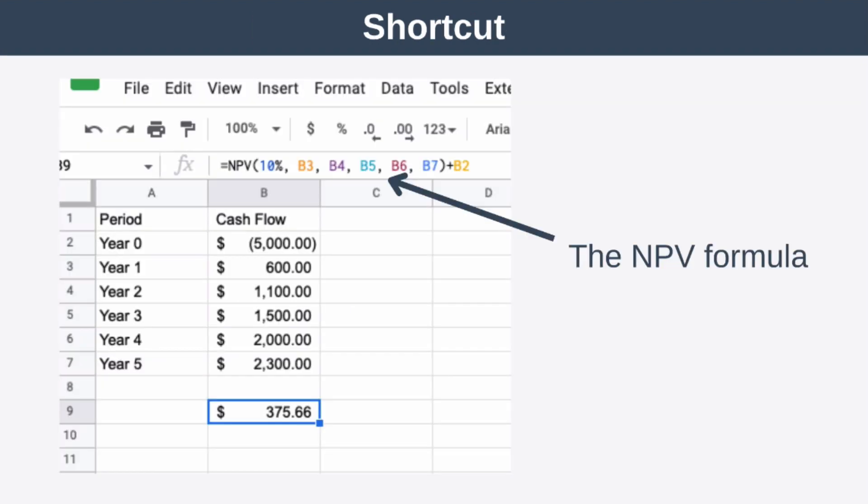Now one final thing to talk about before we wrap up, and that is that by far the quickest way to calculate net present value is to use a spreadsheet such as Excel or Google Sheets. Now to calculate net present value you use the NPV function, where you simply enter your discount rate followed by your cash flows, and then at the very end add on your initial negative investment, and you can see that here.